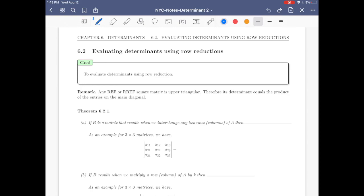The goal is to evaluate determinants using row reduction. We want to see what will be the effect of each type of row reduction on a matrix in terms of evaluating determinants.